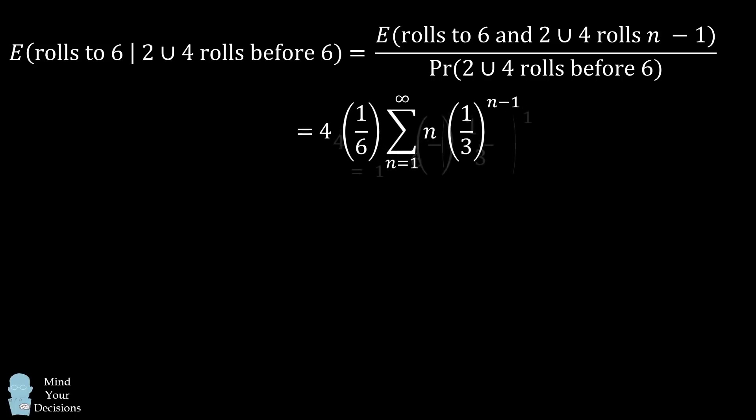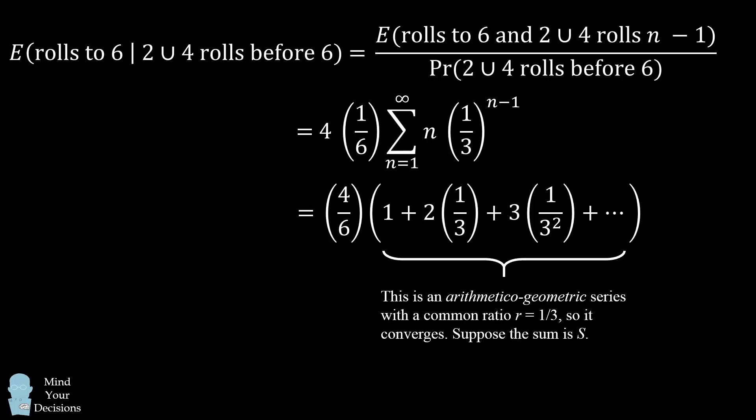So now let's factor out the 1/6 from the summation and write out some of the terms of this summation. So how do we figure out this sum? Well, it turns out this is kind of like a geometric series, but it's being multiplied by increasing terms. So it's known as an arithmetico-geometric series, and it has a common ratio of 1/3. So because the common ratio is between negative 1 and 1, it's a property of arithmetico-geometric series that it'll converge. So I'm going to tell you this sum converges, and now I'm going to show you how you can evaluate this sum s.